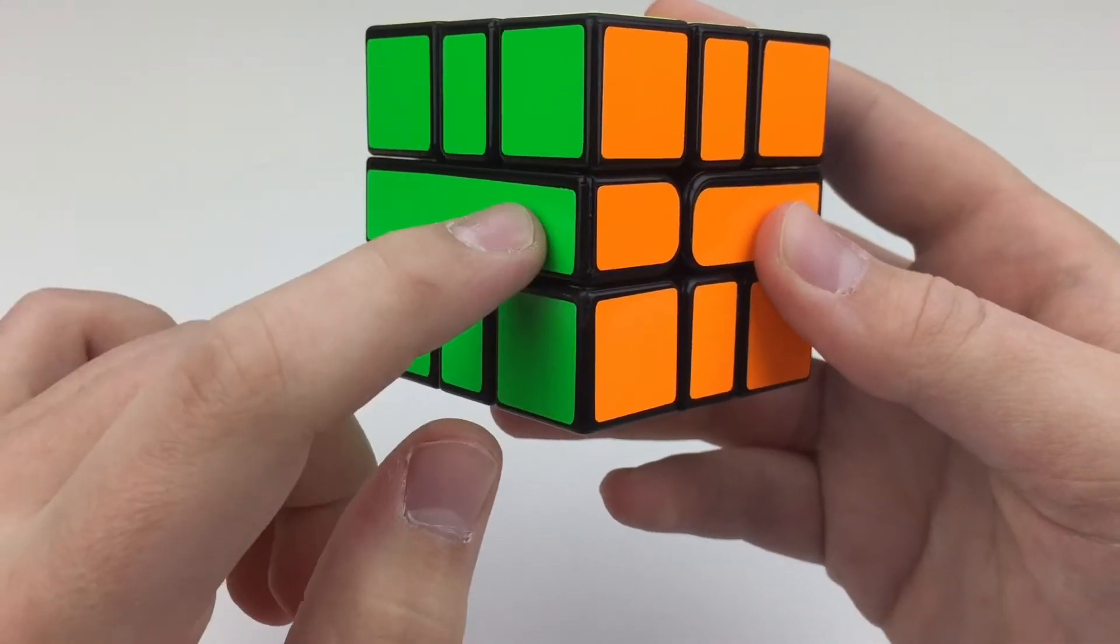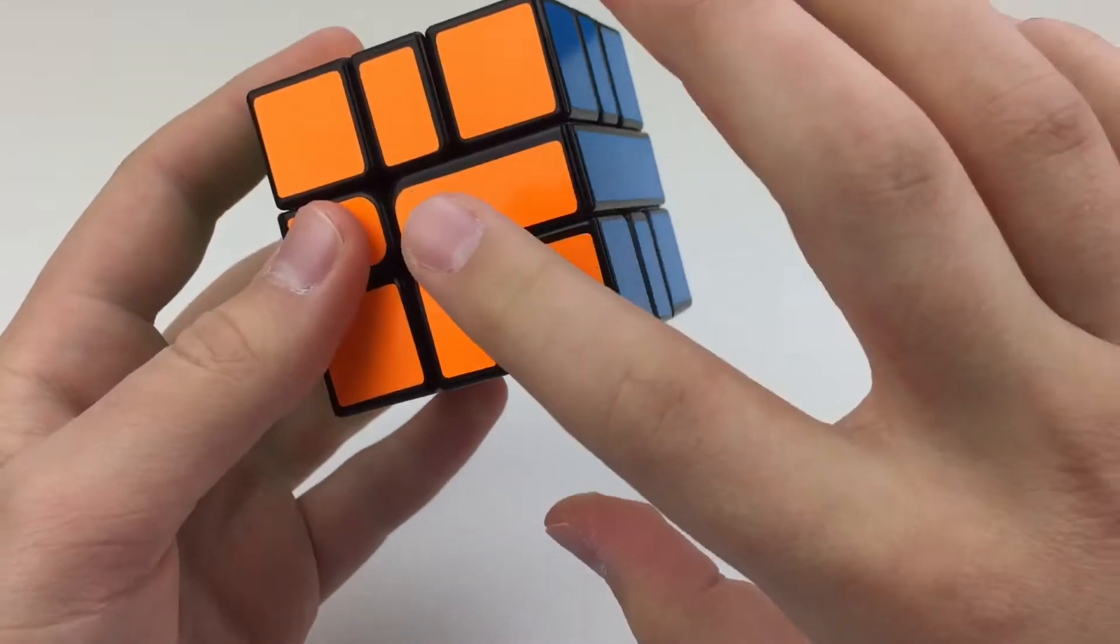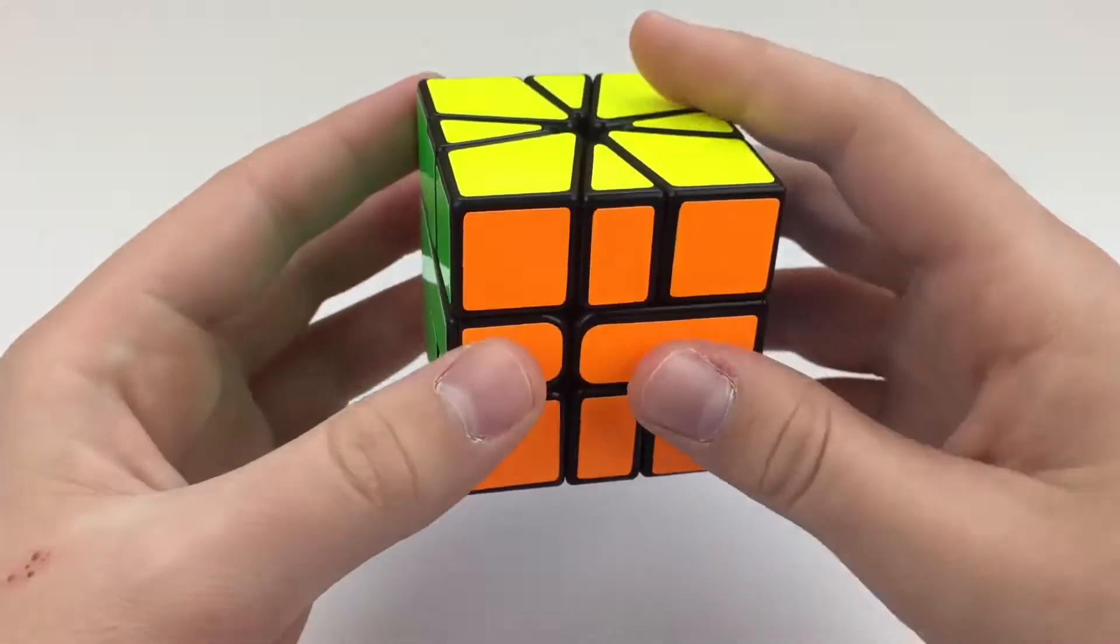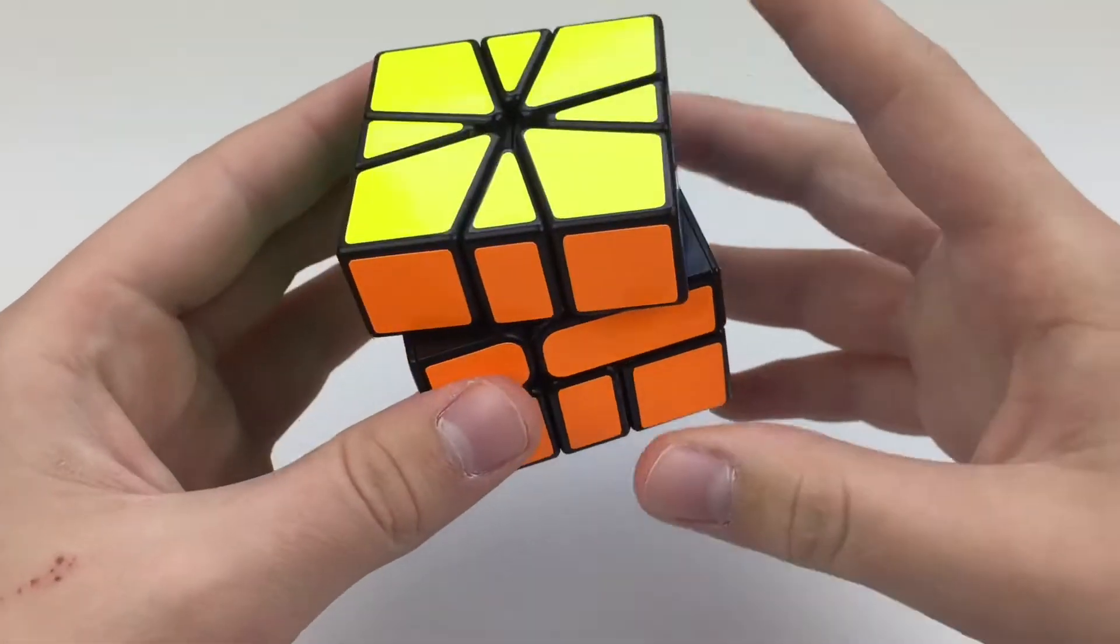I put 6x3mm N50 magnets here, here, here, and here. And I put them on the outside, not in the core, because you can't put them in the core for this type of square one.